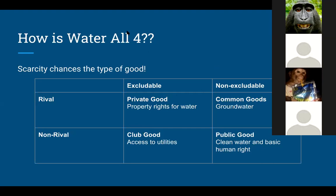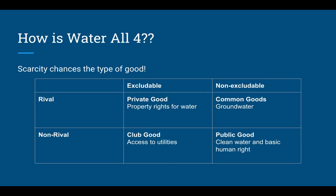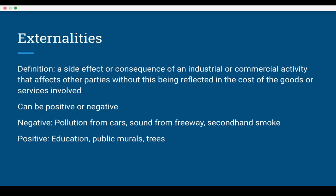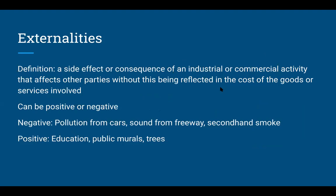Now, another big economics term: externalities. According to the dictionary, it's a side effect or consequence of an industrial or commercial activity that affects other parties without it being reflected in the cost of goods. This can either be positive or negative. Often when we talk about externalities, we're talking about negative externalities, but it's important to know that there are also positive externalities. When this idea was first created in the 1920s by a French economist named Pigou, the concept of negative externalities included things like pollution from cars — when you're driving a car, you aren't paying for the pollution that comes out. Sound from freeways, secondhand smoke — these are things not paid for by the person consuming or selling that good.